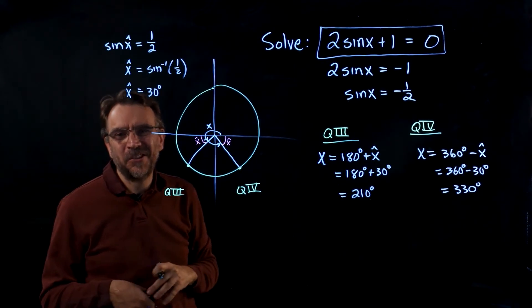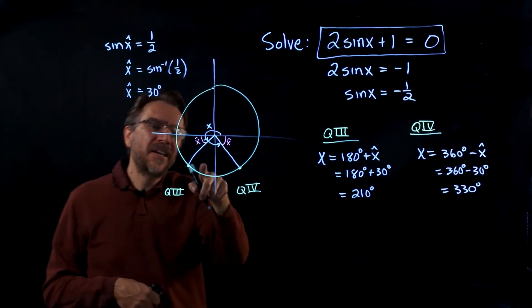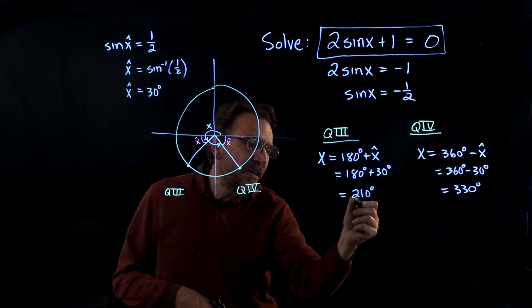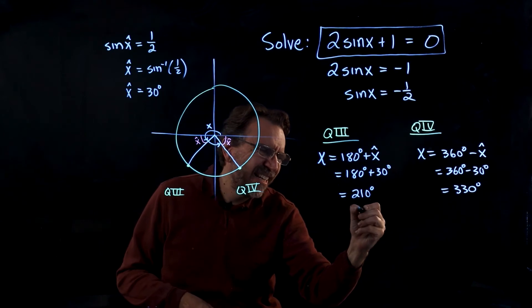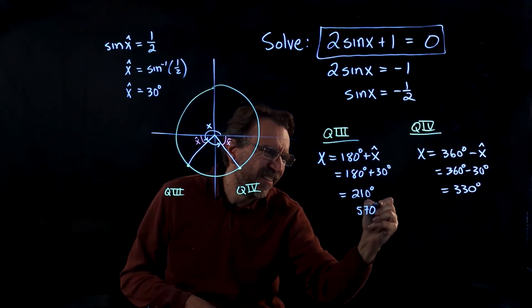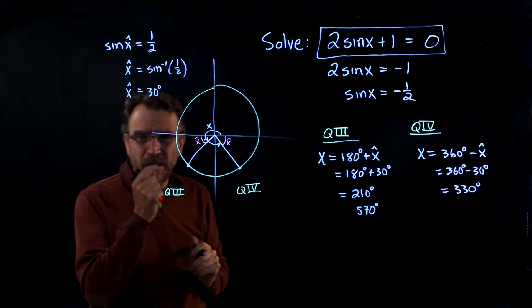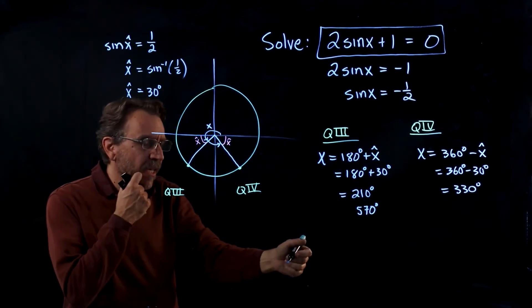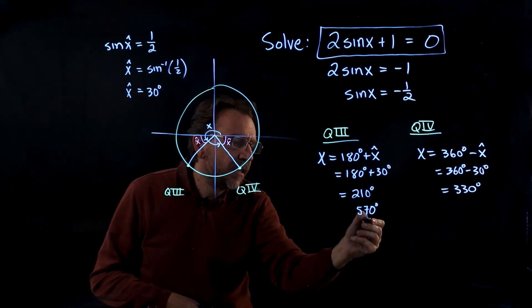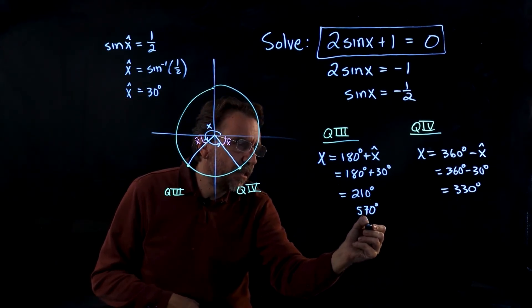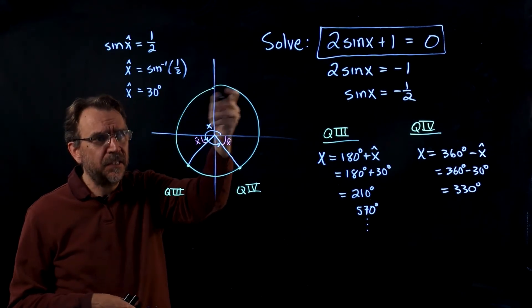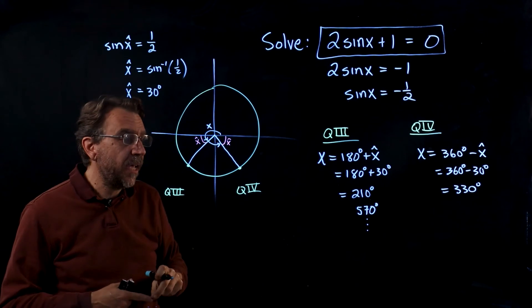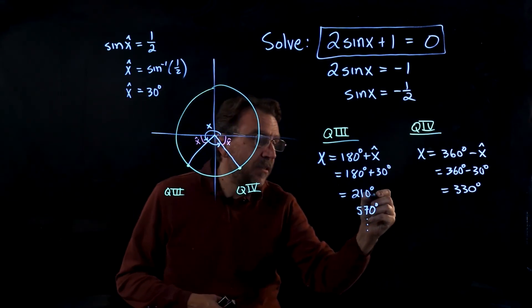But there's more to the story. If I come back to my unit circle and add another 360 degrees to that, so 360 plus 210 is 570 degrees, that'll actually solve the equation as well. If I add another 360, I'll get another solution, and again and again. I can add or subtract 360 degrees and get a coterminal angle. To take care of that situation...